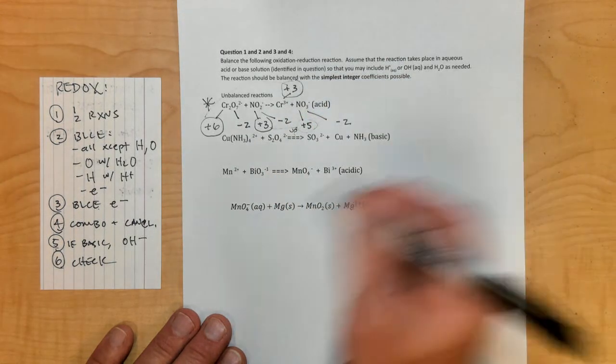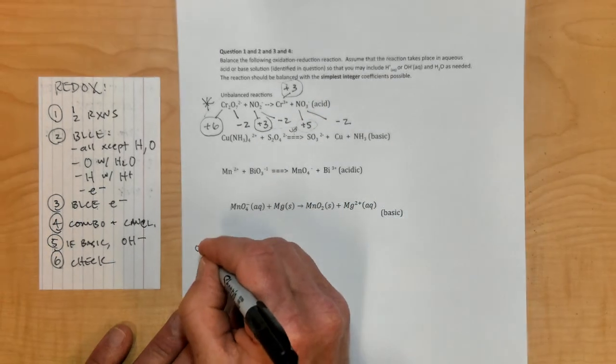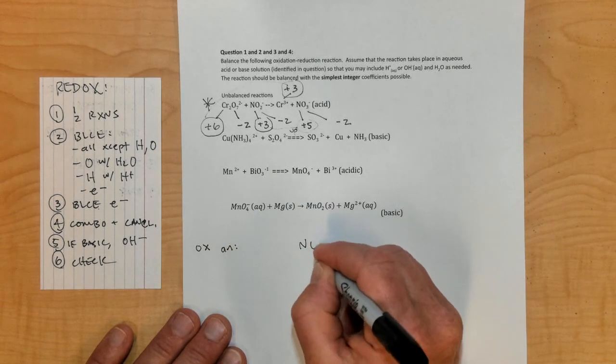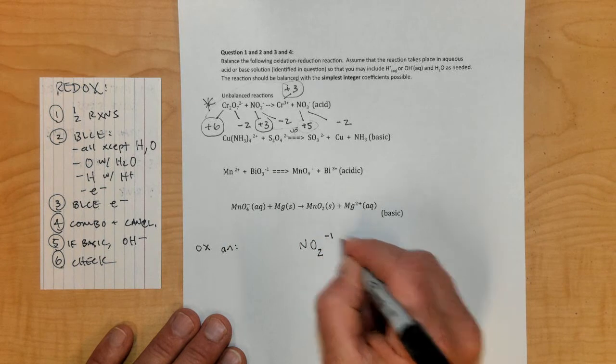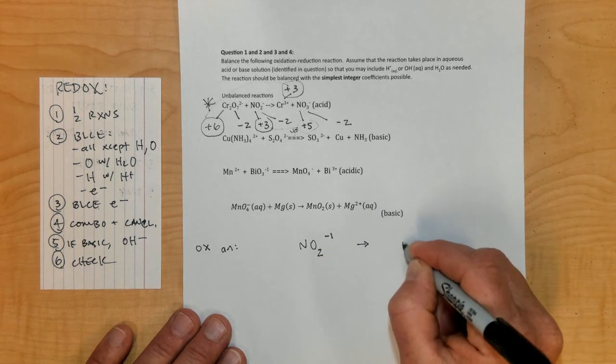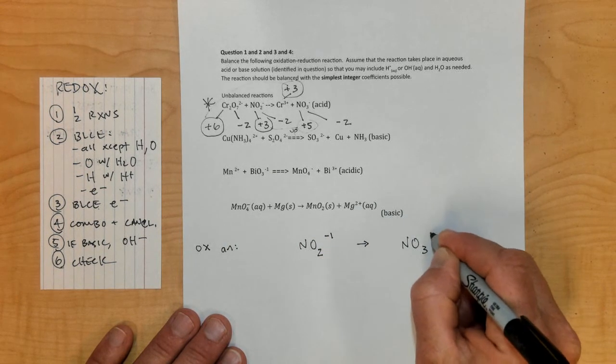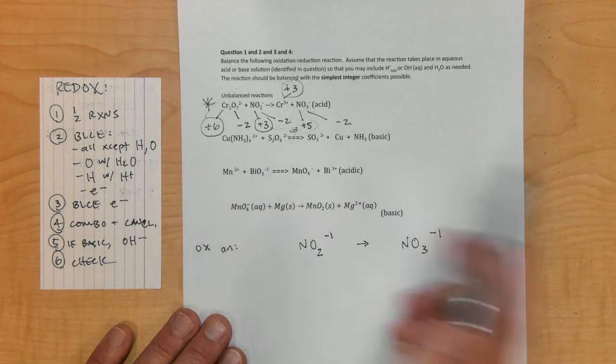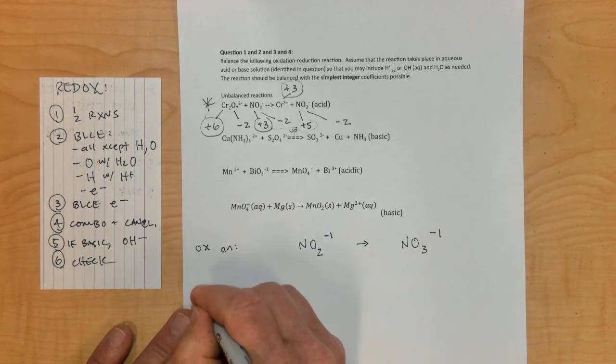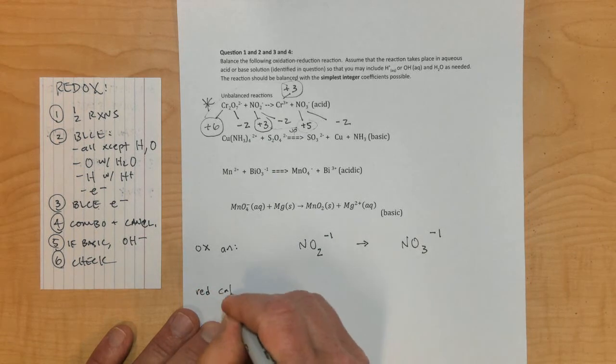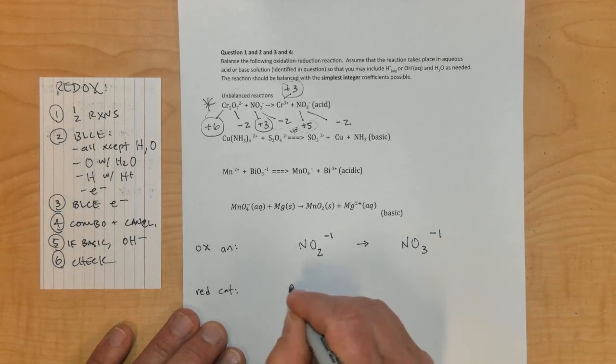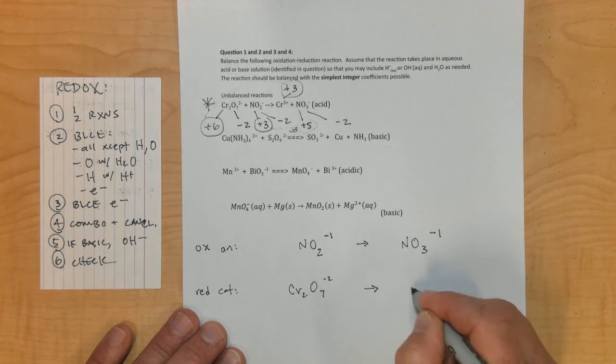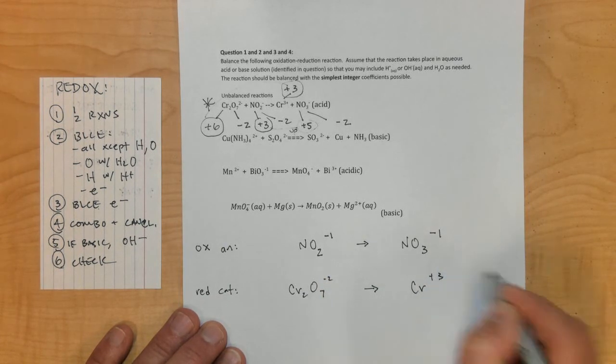If I want to write the oxidation anode half reaction, it would involve NO2 minus 1 going to NO3 minus 1. Nitrogen goes up from 3 to 5. My reduction half reaction, which would be my cathode, would be Cr2O7 2 minus, arrow, and that goes to Cr positive 3.